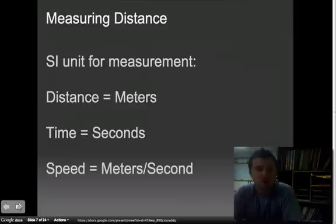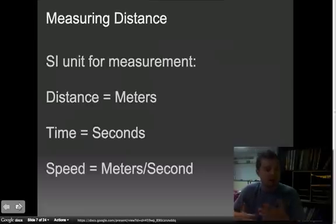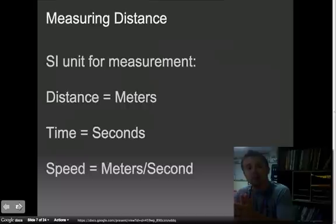When we are measuring distance, we like to use the SI unit for measurement. The SI unit for measurement, the international system for measurement, is in meters. The international system for time in seconds. So that means that when we are calculating speed, speed is always in meters divided by seconds, or you might have heard it as meters per second. Now I know that that sort of probably is going to bring up some questions. What about if I'm driving in my car? That's not meters per second.